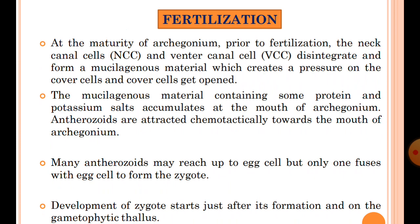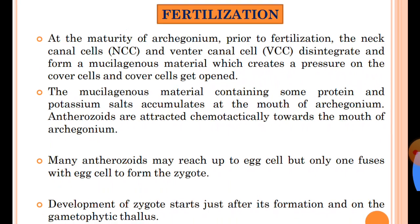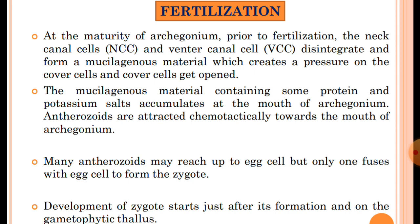Now fertilization in Riccia. At maturity of the archegonium, prior to fertilization, the neck canal cells and venter canal cell disintegrate forming a mucilaginous material. This material imbibes water — containing protein and potassium salts — creating pressure on the cover cells so that they get opened, and the mucilaginous material accumulates at the mouth of the archegonium. Antherozoids are attracted chemotactically towards the mouth of the archegonium. Many antherozoids may reach the egg cell, but only one fuses with it to form the zygote.